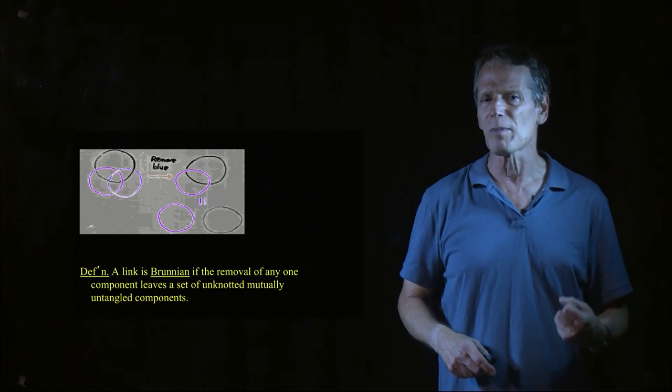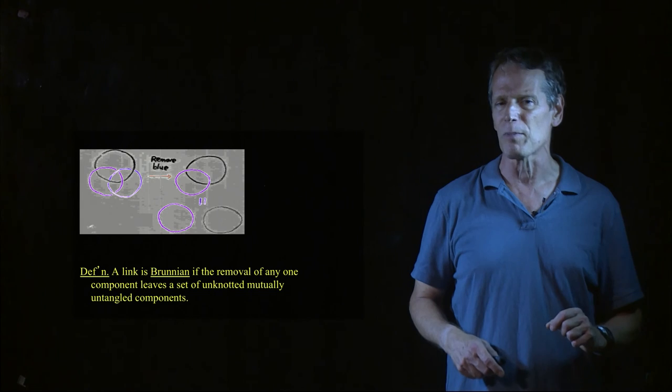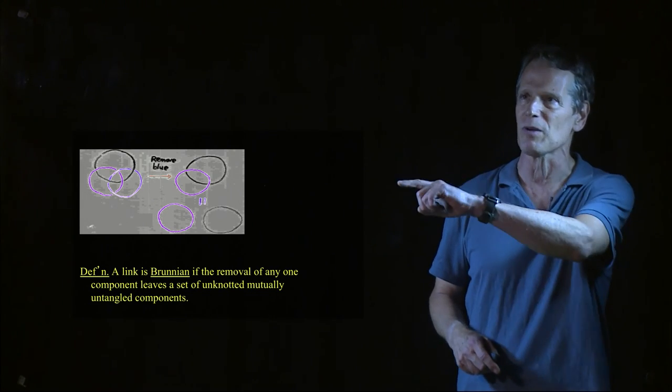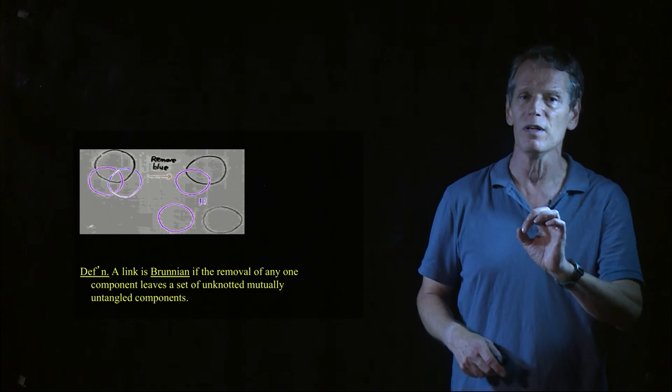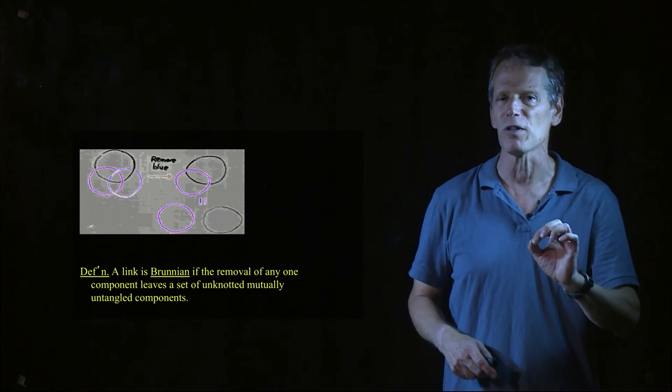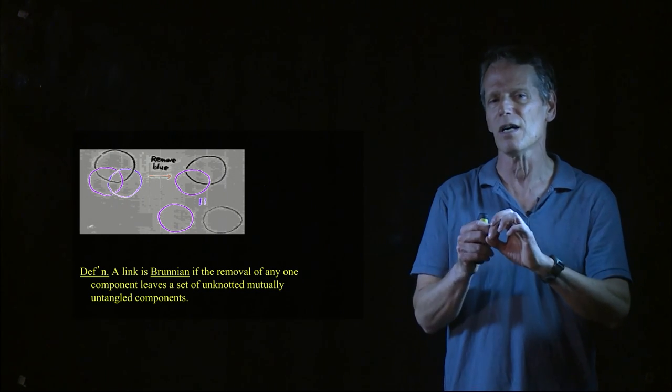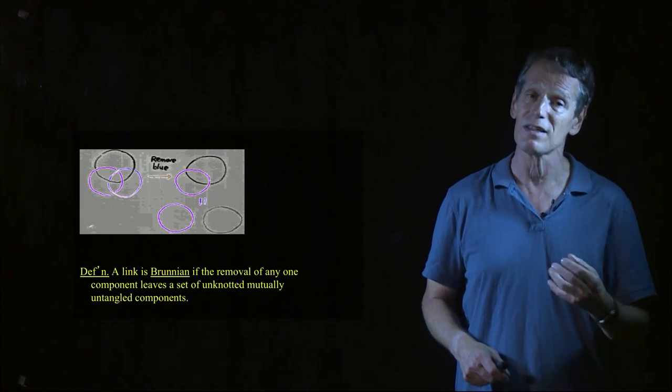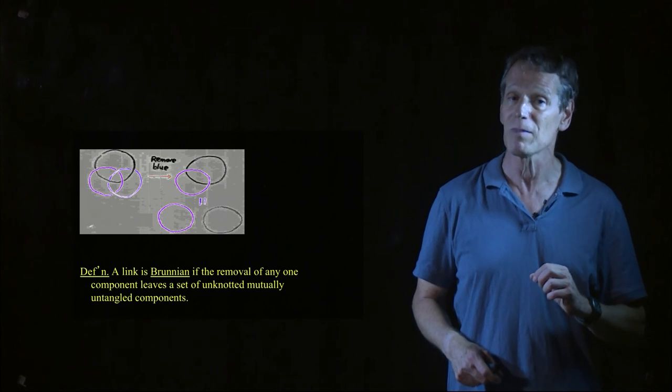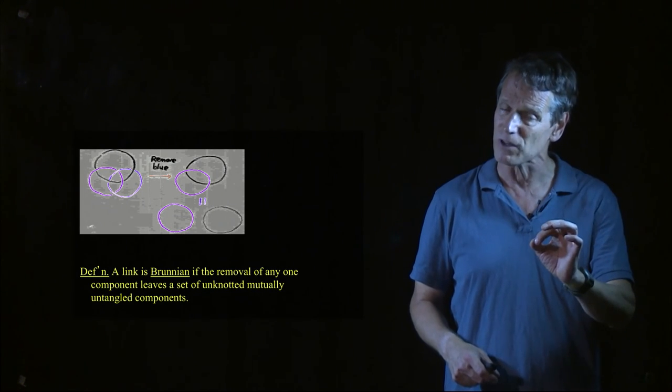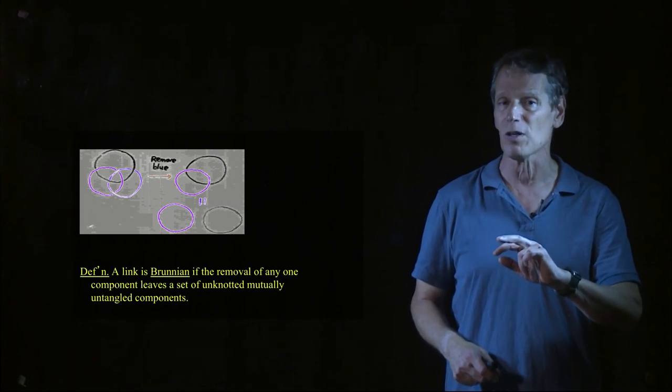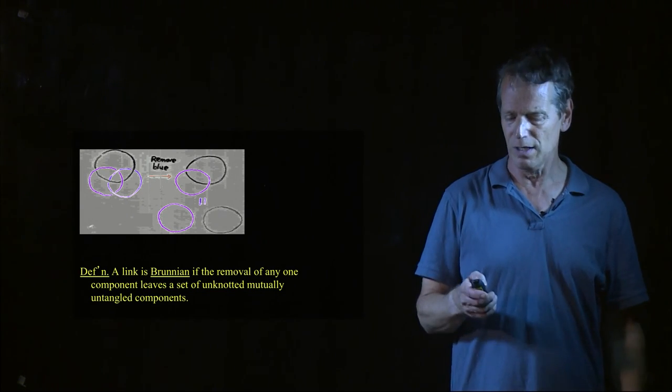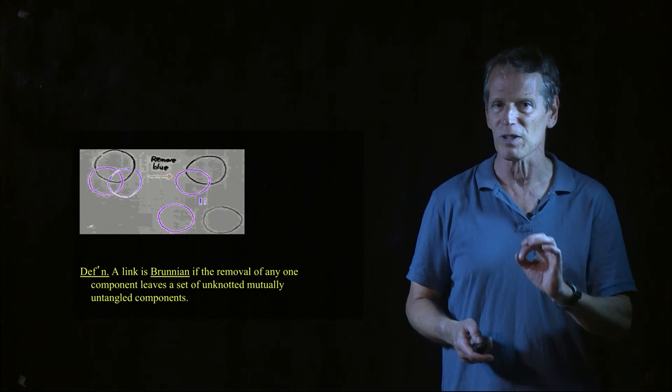And so the interesting thing about the Borromean rings is it has this property that if you remove any one of the three components, so in this example here we're removing the blue component, then the remaining two components become completely unknotted, unlinked rings. And any knot that has that property or any link that has that property is called a Brunnian link. And what that means is you remove any one of the components, the remaining components just become a trivial link of however many components you have left. And so the Borromean rings is a very simple example of that.